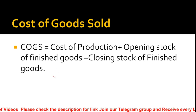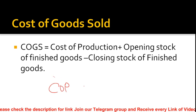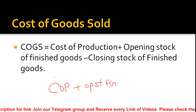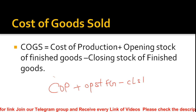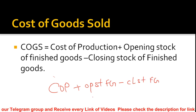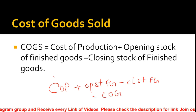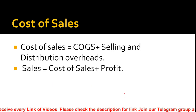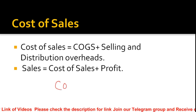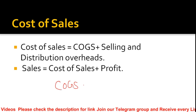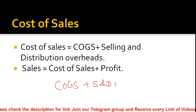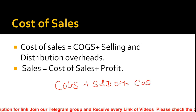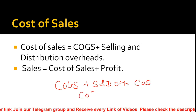Next is COGS — cost of goods sold. Cost of production, plus opening stock of finished goods, less closing stock, gives us COGS. After that, if we add selling and distribution overheads to COGS, the answer is cost of sales.